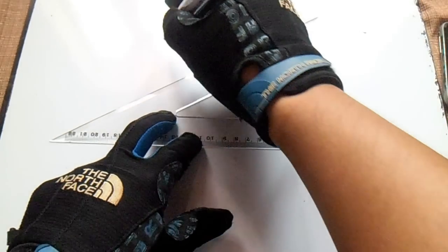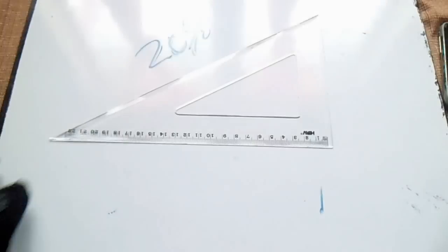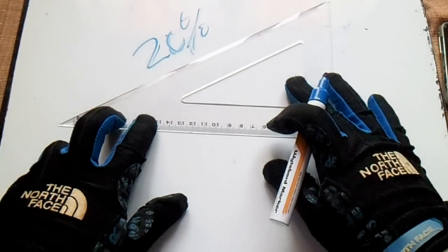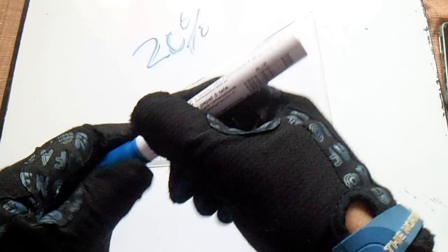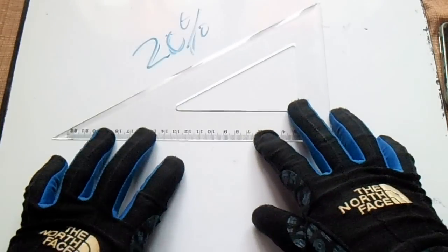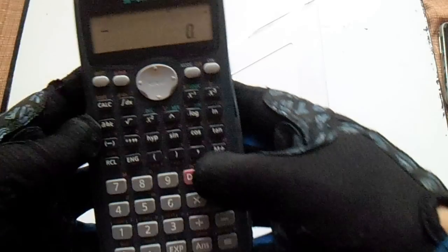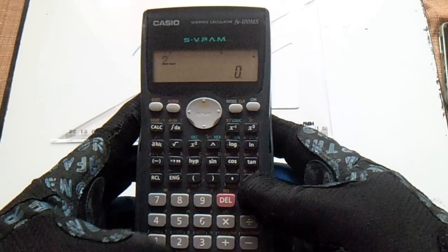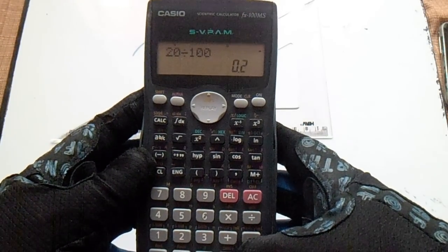To find this slope, let's say we have a 20% slope. If you see this drawing with 20% slope, this is a triangle. To get that slope, just divide 20 by 100, which equals 0.2.